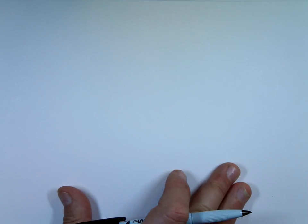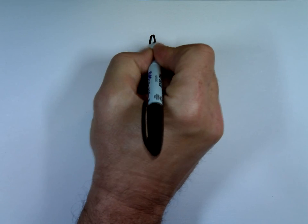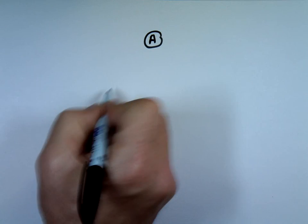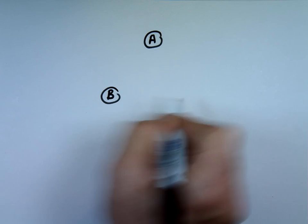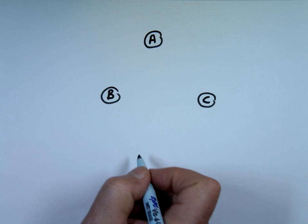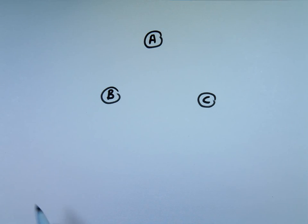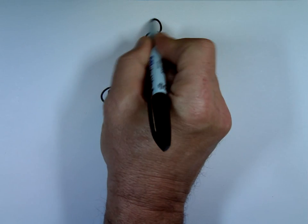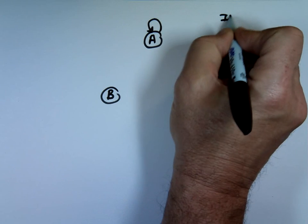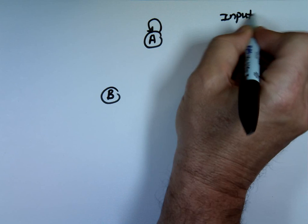Here's the diagram. State A, state B, state C. Notice I didn't put the output under them because it depends. Input, the notation here slash output.